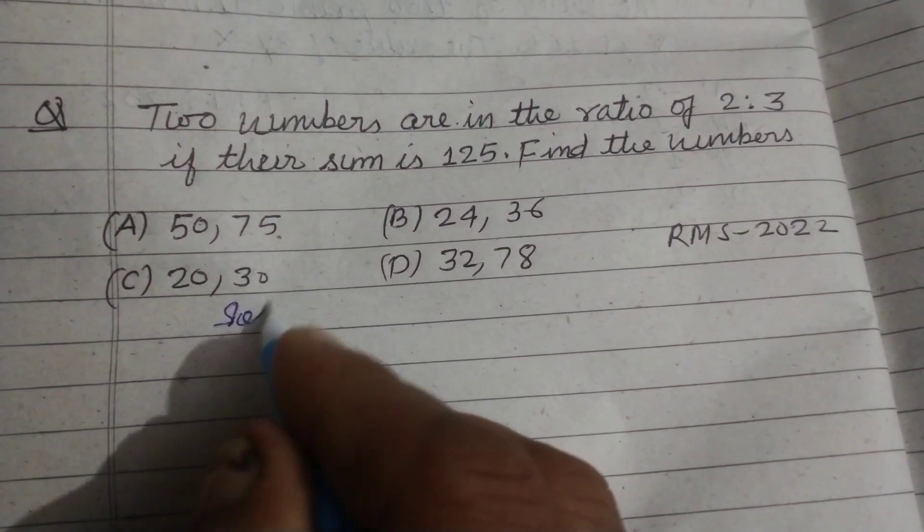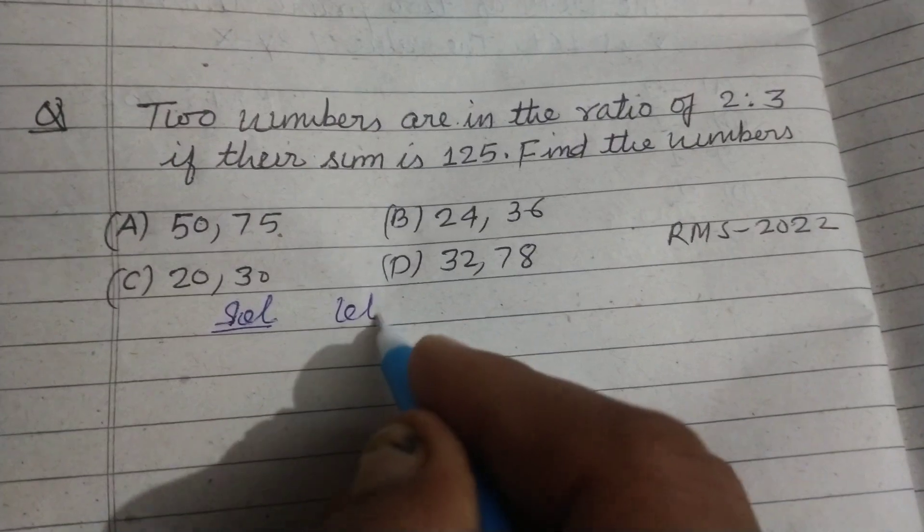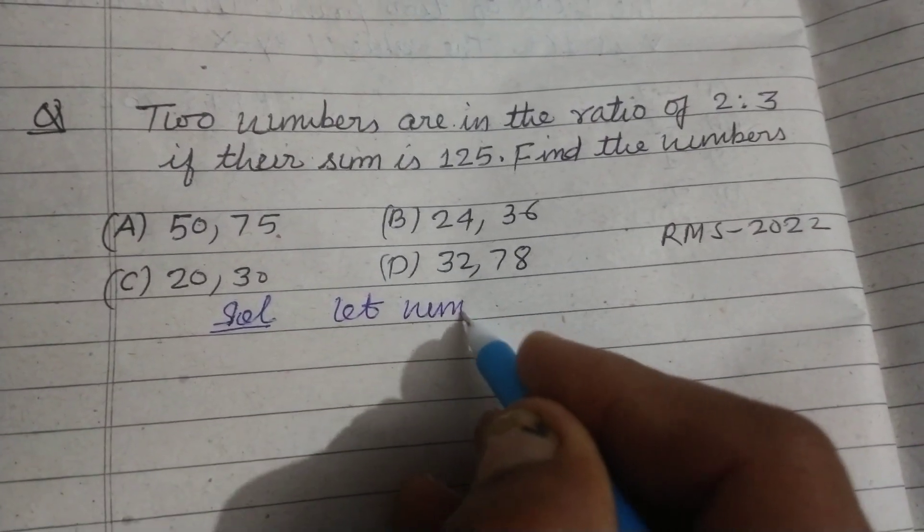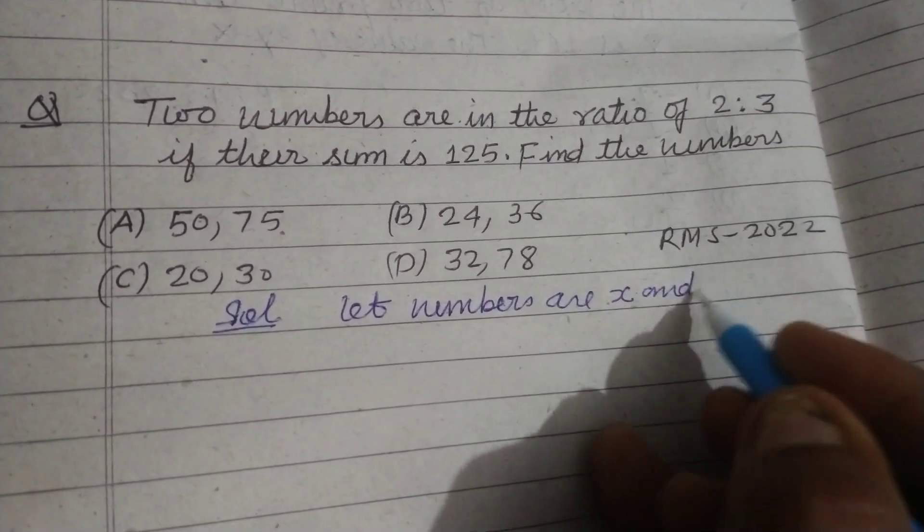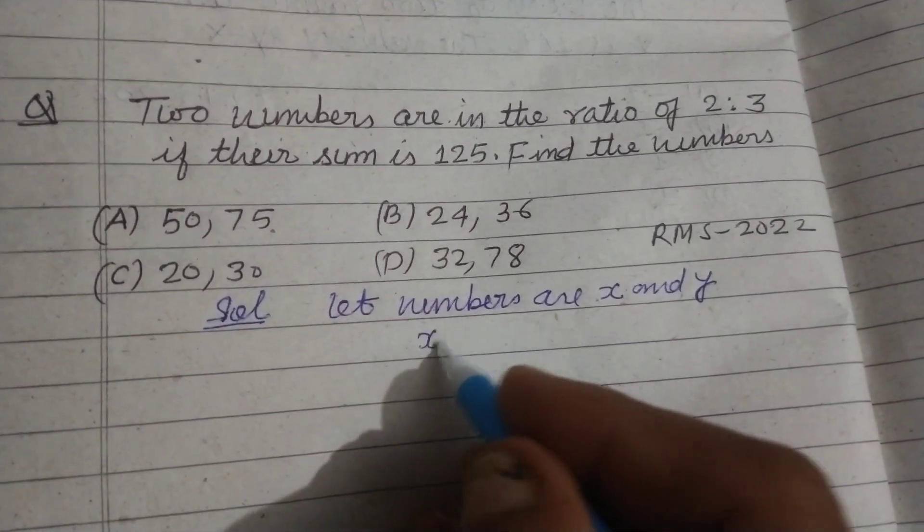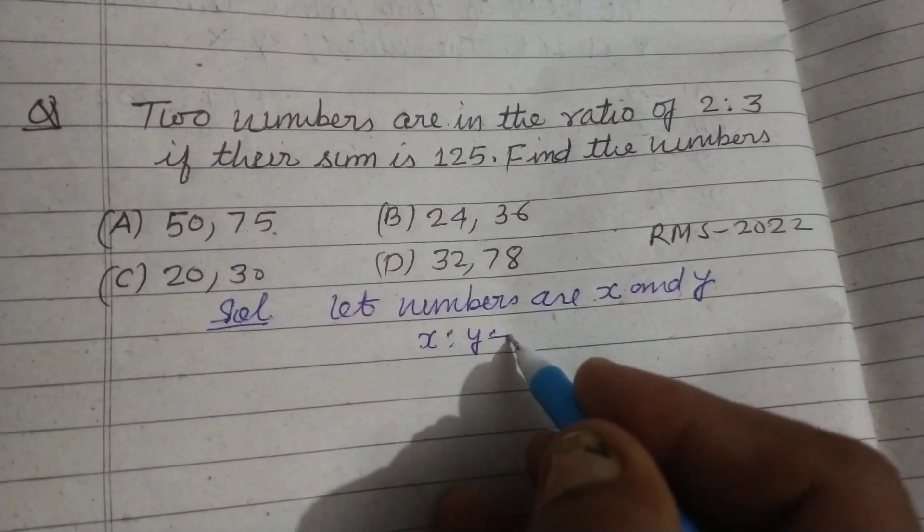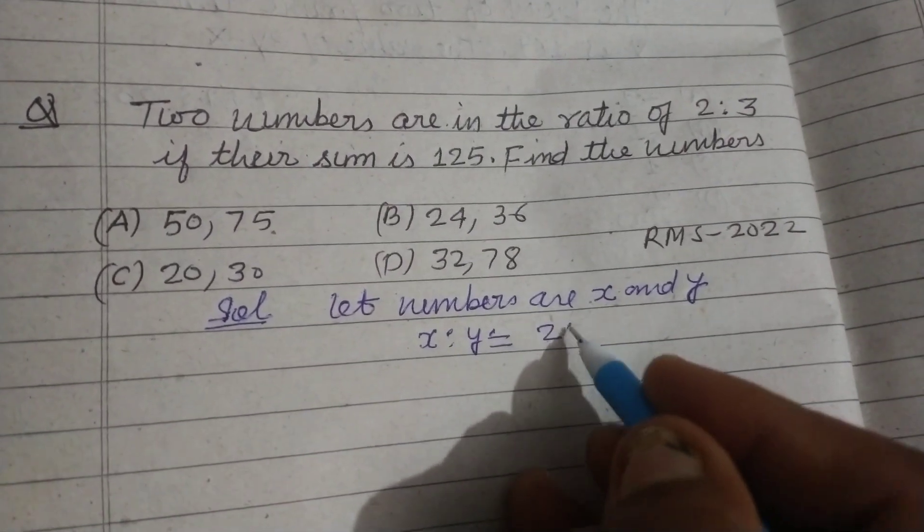So here, let the numbers be x and y. The ratio of x to y is given to us as 2:3.